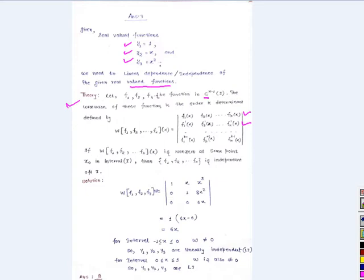Continuing up to f₁^(k-1)(x) up to fₖ^(k-1)(x) in the last row. If this Wronskian is not equal to zero, then the real-valued functions are linearly independent.